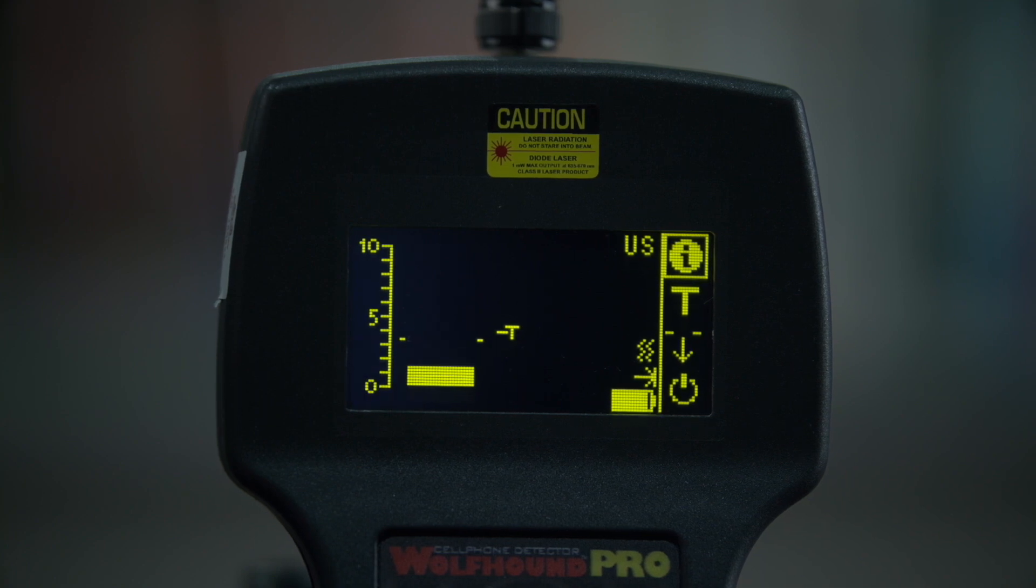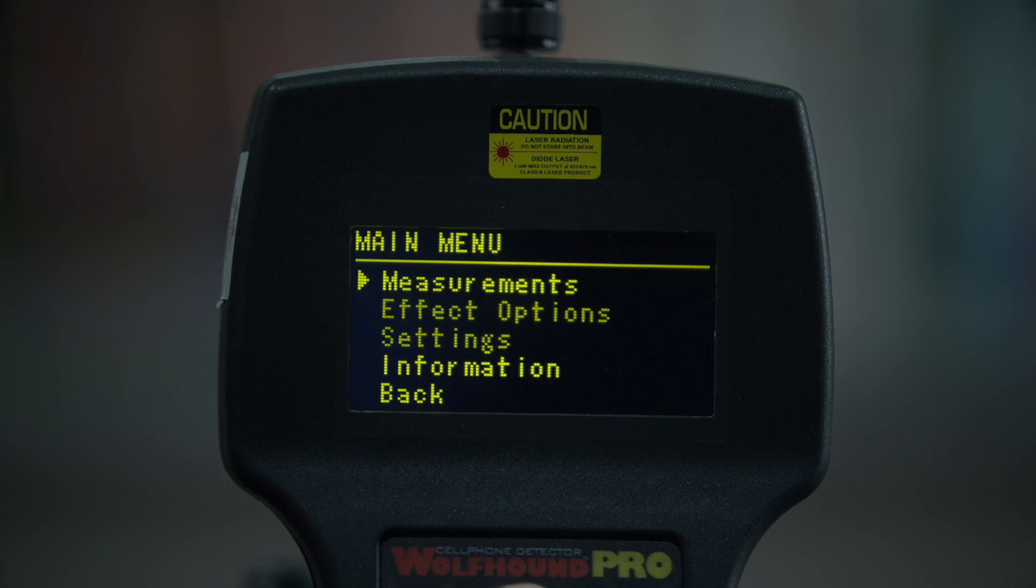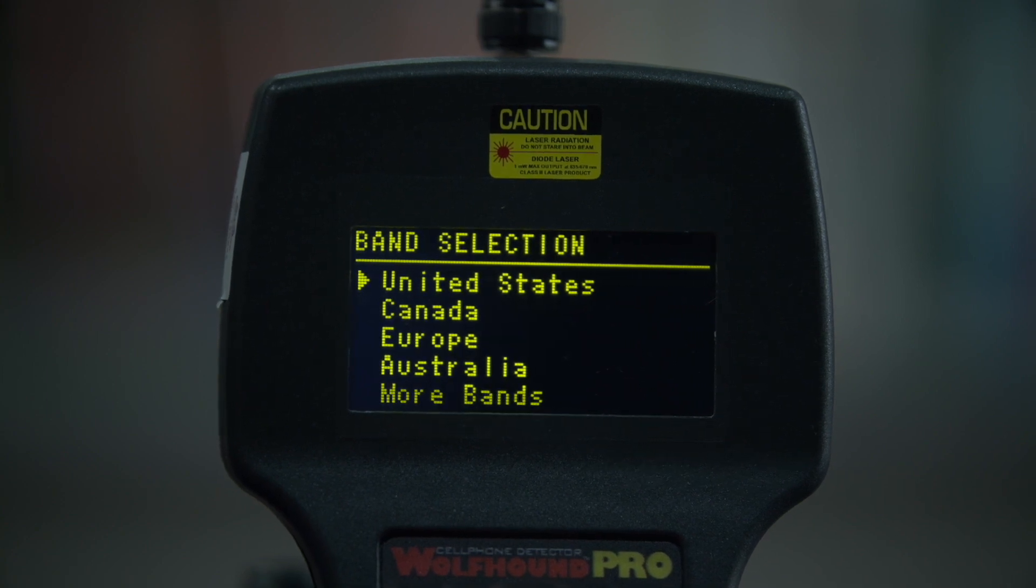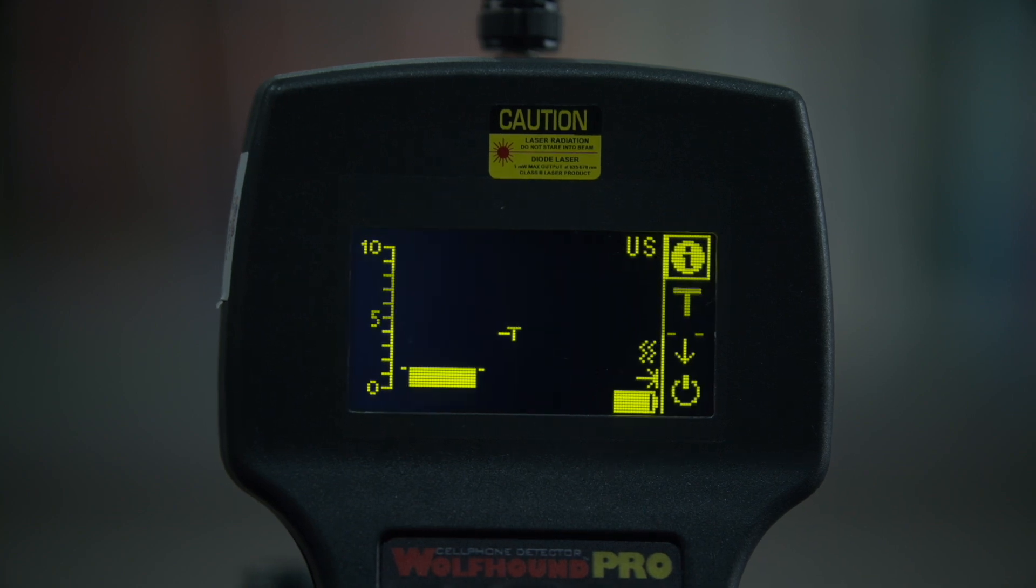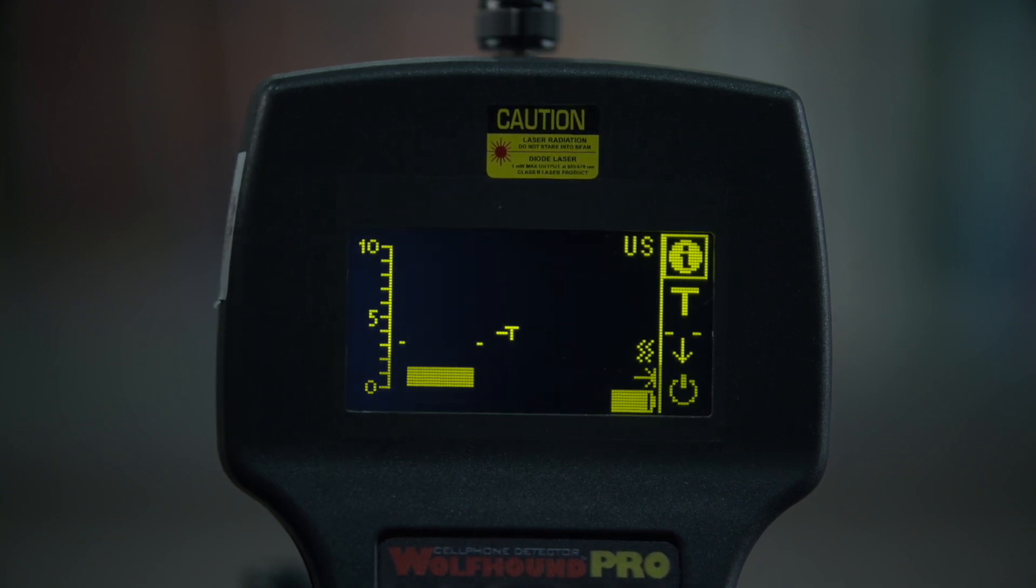After turning on the Wolfhound Pro, confirm it is set to the correct country or region code. If it is not set to the correct country, then highlight the eye and press the settings and then band selection. Next, locate the down arrow icon. If the down arrow icon is not shown, highlight the eye icon and press enter. Then go down to measurements and then foam detection.